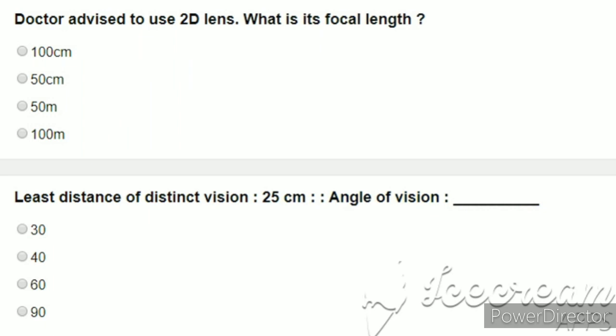Next question. A doctor advised to use 2D lens. What is its focal length? P is equal to 100 by F. F is equal to 100 by P, 100 by 2 equals 50 centimeters. Answer: 50 centimeters. Next question. Least distance of distinct vision is 25 centimeters. Then angle of vision? Generally for healthy human being it is 60 degrees. This is the third option. Answer: 60 degrees.